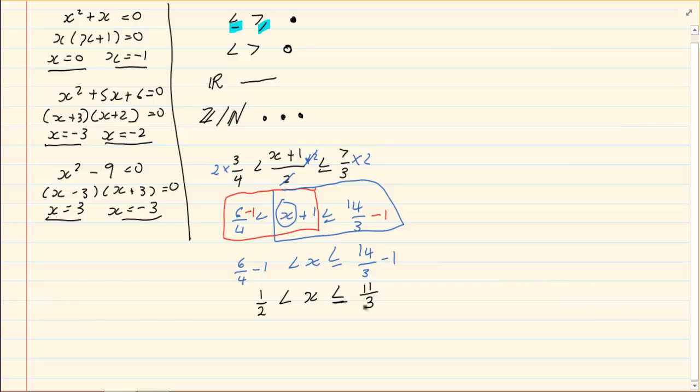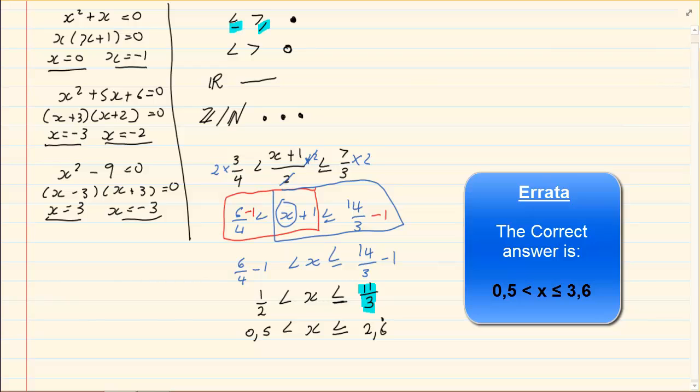Now when you are doing a number line, it is difficult to draw 11 over 3. It is easier to get it in a decimal form. So we would have x is greater than 0.5 but it is smaller and equal to 2.6 recurring. It is easier to see 2.6 on a number line because you now know it is after 2 but it is before 3.